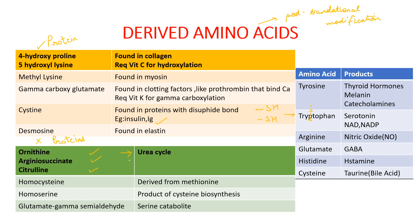Amino acids form certain special products which perform important functions in the human body. Tyrosine is required for the synthesis of thyroid hormones, melanin, and catecholamines. Tryptophan is required for synthesis of serotonin and niacin, which is required for synthesis of NAD and NADP. Arginine helps in nitric oxide synthesis, whereas glutamate on decarboxylation forms GABA, an important neurotransmitter. Histidine forms histamine by a similar process. Cysteine, synthesized from methionine and serine, forms taurine, which is important for bile acid synthesis.